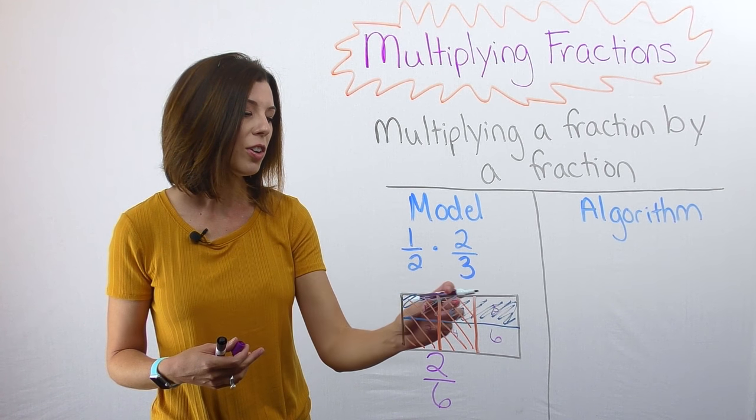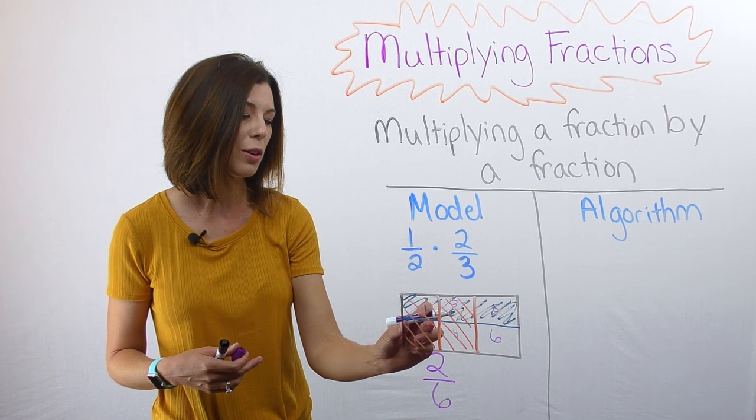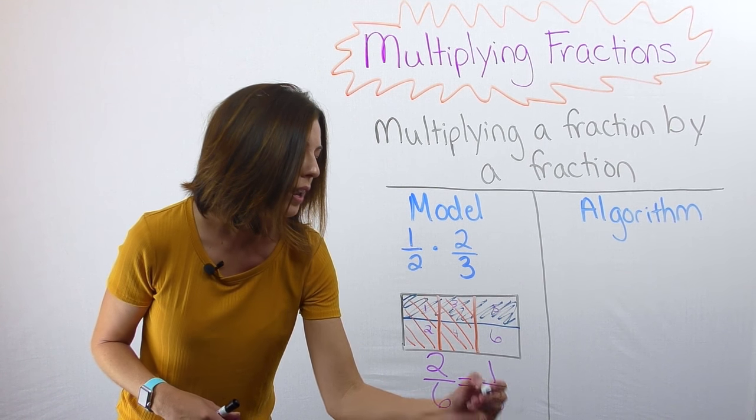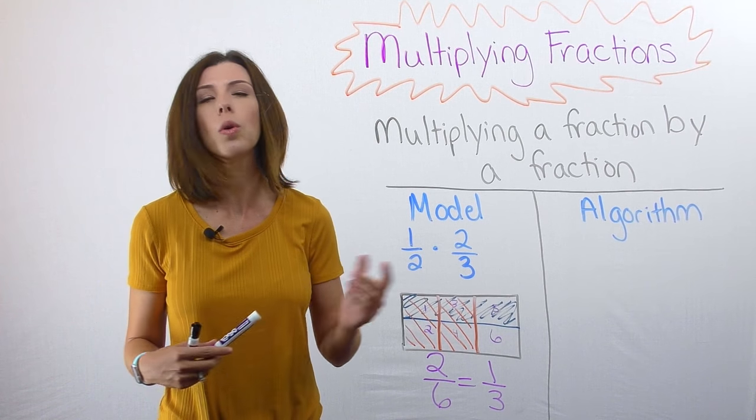Obviously, I know that I can also think of this as moving this copy over here if we drew it slightly different. So I know that that would be one-third, so two-sixths or one-third.